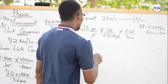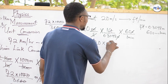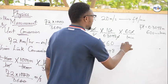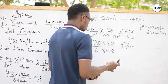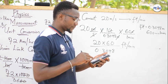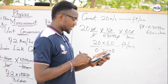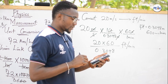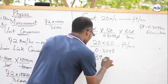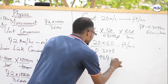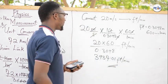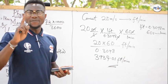Multiply everything at the numerator and divide by everything at the denominator. At the numerator: 20 times 60; at the denominator: 0.3048. So we have 20 times 60 divided by 0.3048, which equals 3937.01 feet per minute. Very simple.